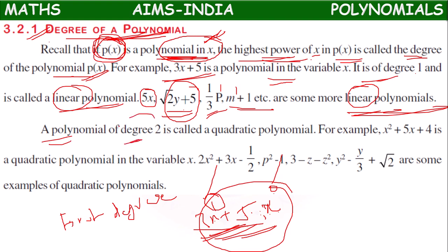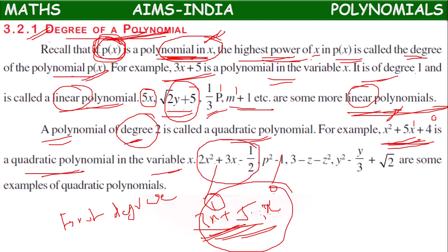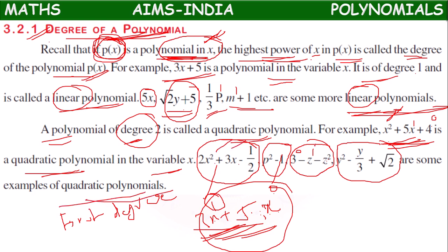A polynomial of degree 2 is called a quadratic polynomial. For example, x squared plus 5x plus 4 — here the powers are 2, 1, and 0, so the highest power is 2, making it a quadratic polynomial in variable x. Other examples include 2x squared plus 3x minus 1/2, p squared minus 3, minus z squared, and y squared minus y/3 plus root 2. These are all examples of quadratic polynomials whose highest degree is 2.